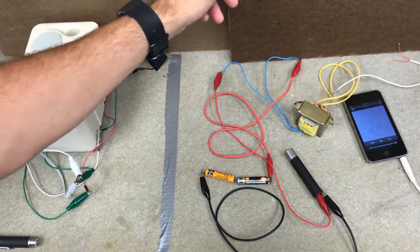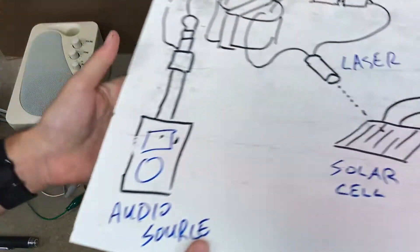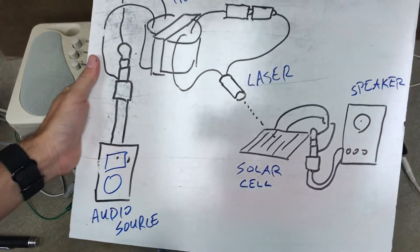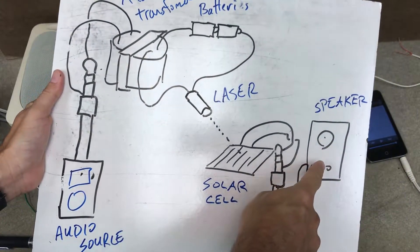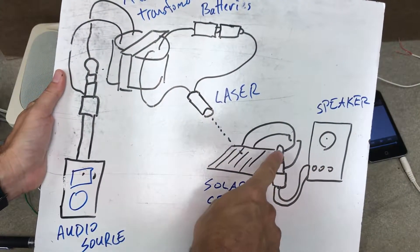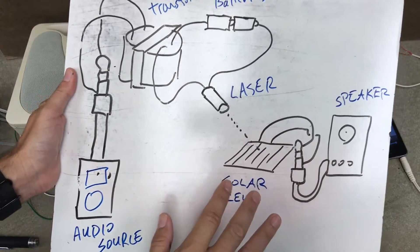I've already taken this apart. Let me show you a simple diagram so you can see what happens here. I have a speaker hooked up to the solar cell, and there's the jack. That works, I've already shown that before.